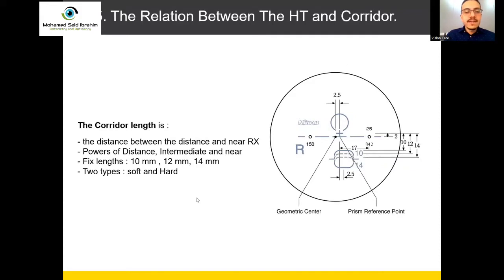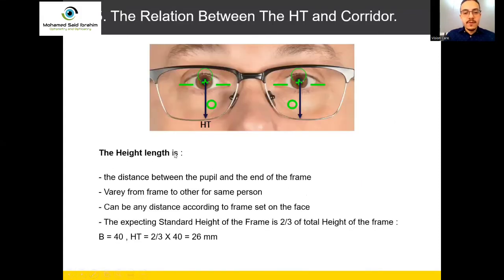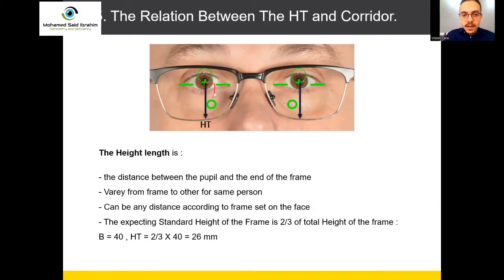We also need to define the height. What is the height? The height is the distance between the center of the progressive and the end of the frame, or the lens inside the frame. This is the height from the center, but until the end of the frame. The corridor is only from the cross until the beginning of the circle of the reading area, but the height is from the cross to the end of the lens.